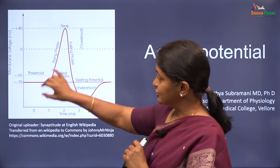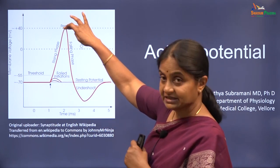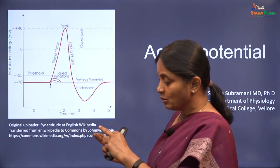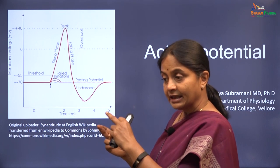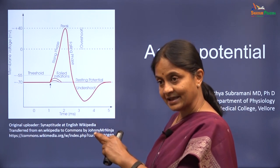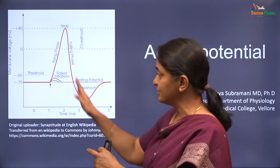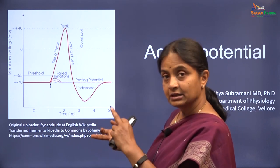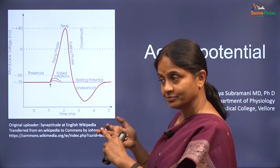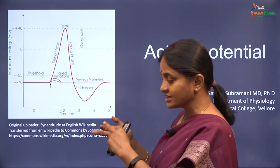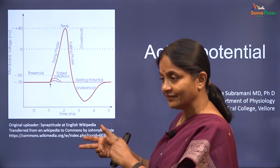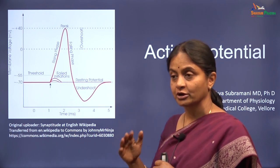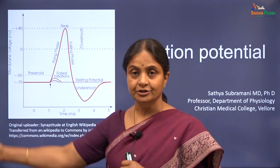An action potential is a brief period of positivity inside the cell at the local point where you are being touched. An action potential that develops there quickly resolves — the membrane comes back to resting state at that point — whereas once that action potential is formed, it induces an action potential in the next part of the nerve, and the next, and so on, till it is ultimately transmitted to the cortex via other neurons.